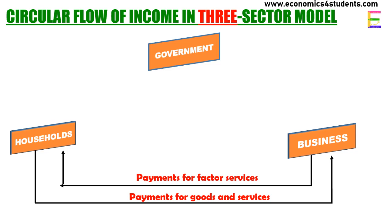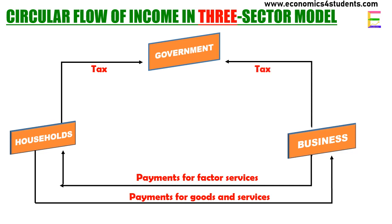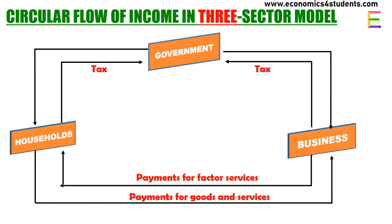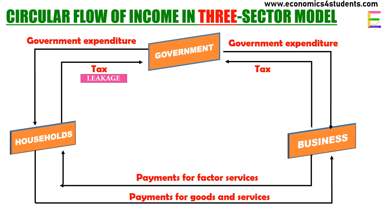Now we include the government sector to the two-sector model to create the three-sector model. The government imposes taxes on households and firms, so part of household income flows to the government in the form of taxes, and taxes also flow from firms to the government. The government spends money collected through taxes to discharge various functions such as administration, law and order, and buying goods and services — so income flows from government to households and firms in the form of government expenditure.